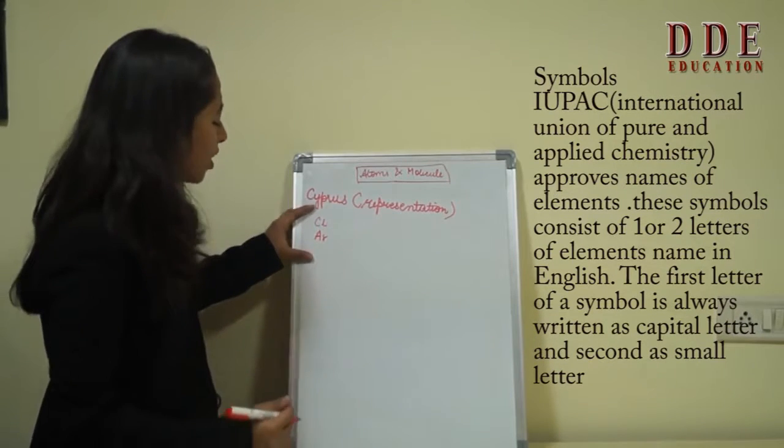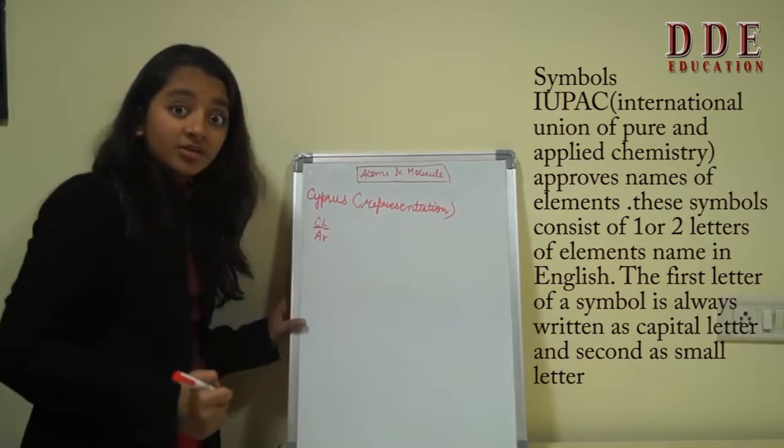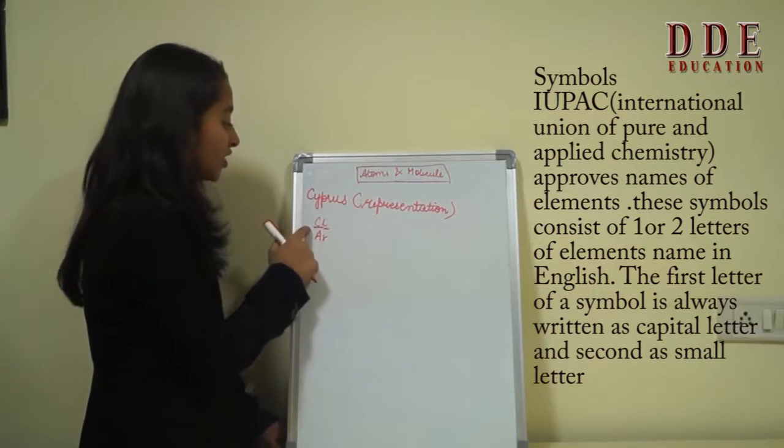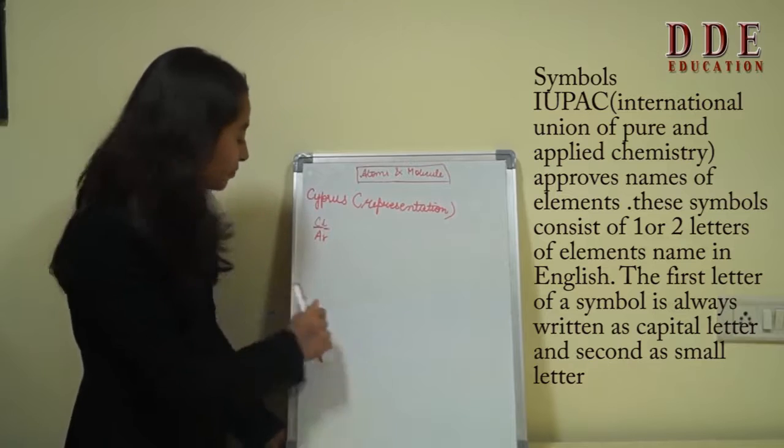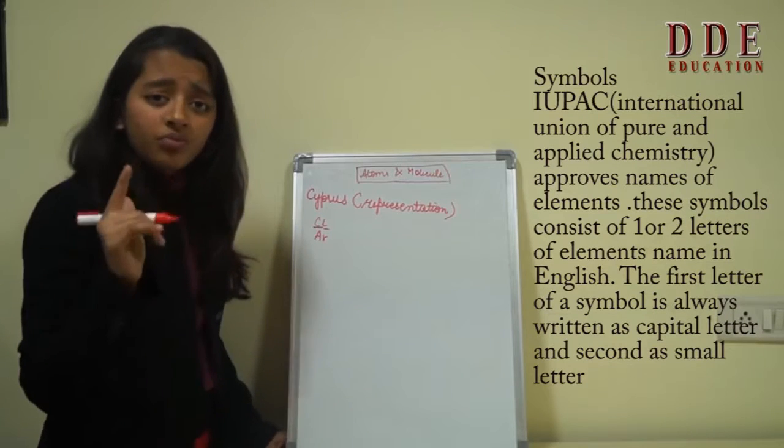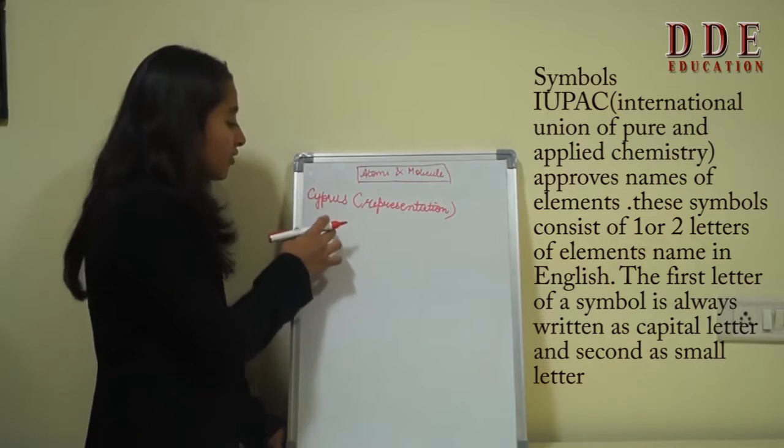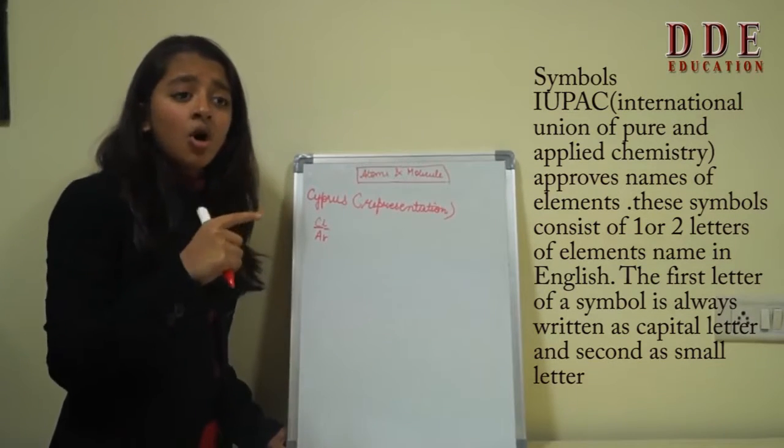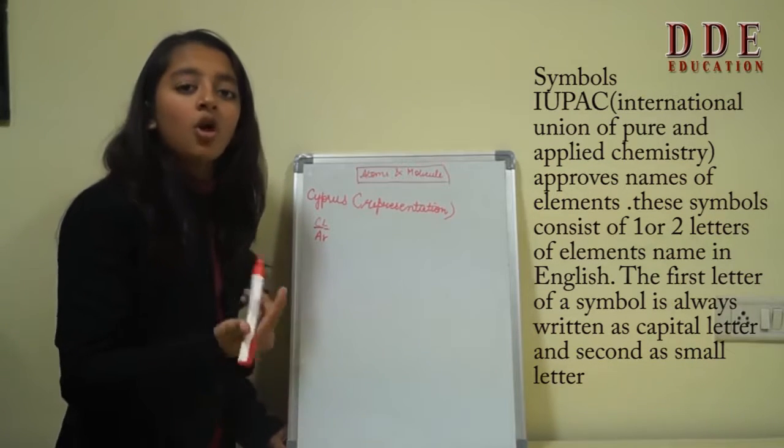Now you might be wondering why I have written one letter capital and one letter small. This is the rule for writing an element's name. One letter should be capital and the other letter would be small. And whenever we are writing about an element, we take the first two letters of either its Latin name or its English name depending upon the availability of that name.